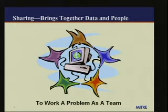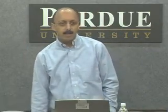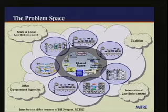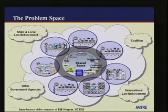Sharing in a very general, high-level marketing kind of sense is that you do sharing because it brings data and people together to work a problem as a team. The problem space we are particularly interested in, in the government, is that you have a lot of federal agencies and other government agencies, each with their own networks and their own set of data that they control. Clearly there's a need to share data across these organizations, so they've set up a shared space in between which allows these agencies to collaborate.